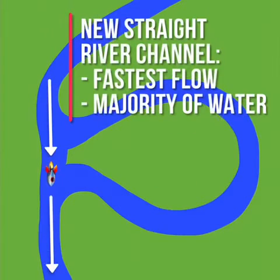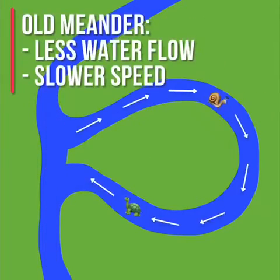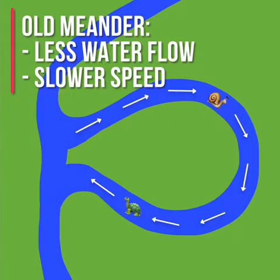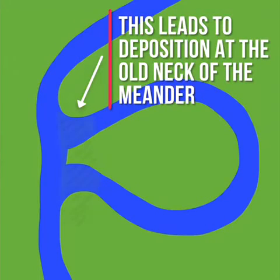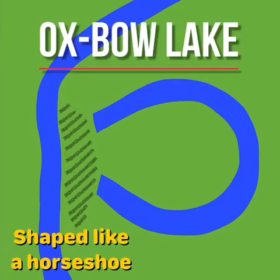An island of land is created in the middle. The fastest flow and the majority of water will follow the straight river channel. Over time, less water will follow the old meander and the speed of water flow will be much slower. This leads to deposition at the old neck of the meander, which cuts it off from the main river channel, and an oxbow lake is now formed.